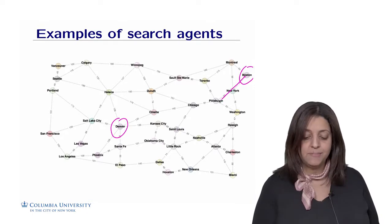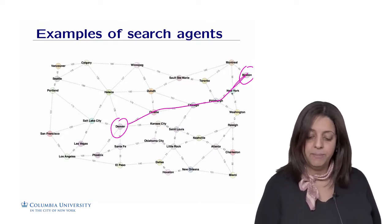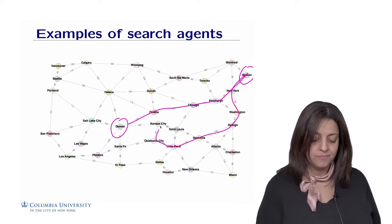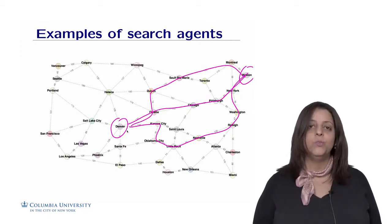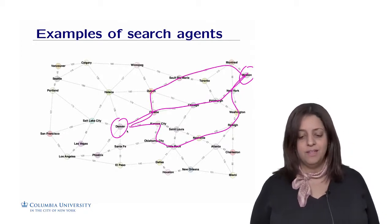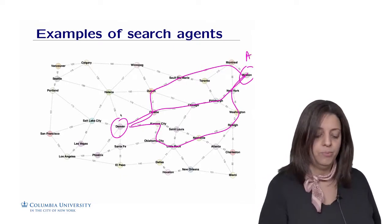So it could be, for example, this path here. It could be going this way or it could be going that way. So there are different ways, different paths that lead from the point A to point B.